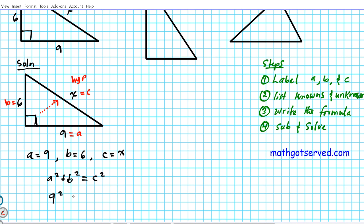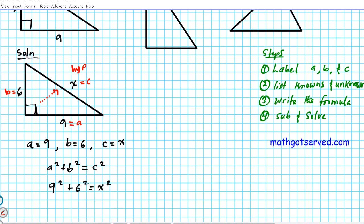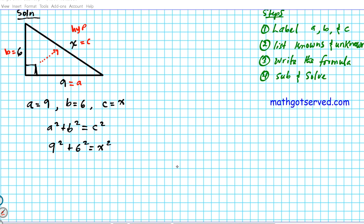Substitute: 9 squared plus 6 squared equals X squared. We substituted the values of A, B, and C into the Pythagorean theorem to get this equation. Now let's solve it for X. Simplify 9 squared and 6 squared: 9 squared is 81, plus 6 squared is 36, which equals X squared. When we add 81 and 36, we get 117. Using the reflexive property of equality, X squared equals 117.